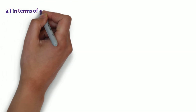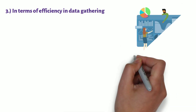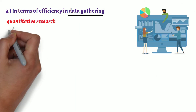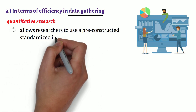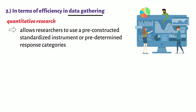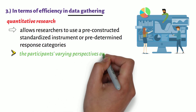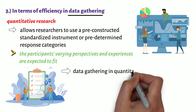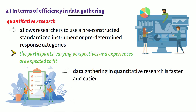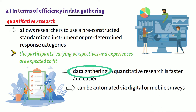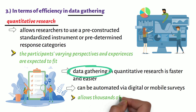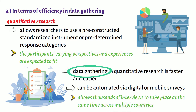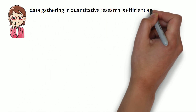Third, in terms of efficiency in data gathering. Quantitative research allows researchers to use a pre-constructed standardised instrument or predetermined response categories into which the participants' varying perspectives and experiences are expected to fit. Hence, data gathering in quantitative research is faster and easier. In fact, data gathering in quantitative research can be automated via digital or mobile surveys which, for example, allows thousands of interviews to take place at the same time across multiple countries. As we can see, data gathering in quantitative research is efficient and requires less effort.